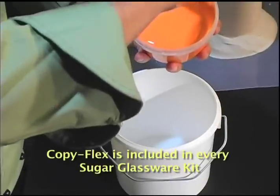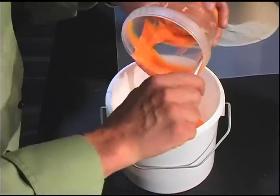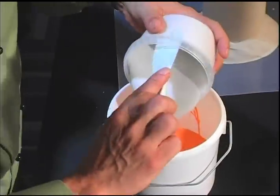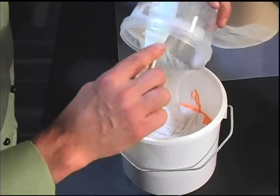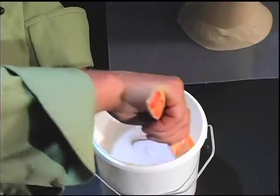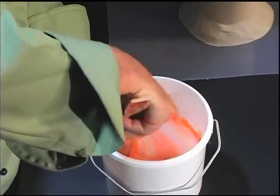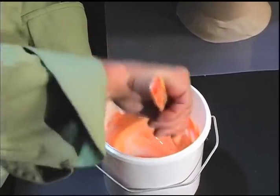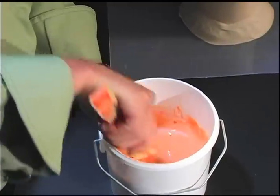Pre-measured amounts of CopyFlex liquid silicone are provided with each sugar glass kit. CopyFlex comes in two parts identified as Part A, which is orange in color, and Part B, which is white. Combine both Parts A and B in a mixing container and mix thoroughly, scraping the sides and bottom to get a complete combination and a uniform color with no streaking.